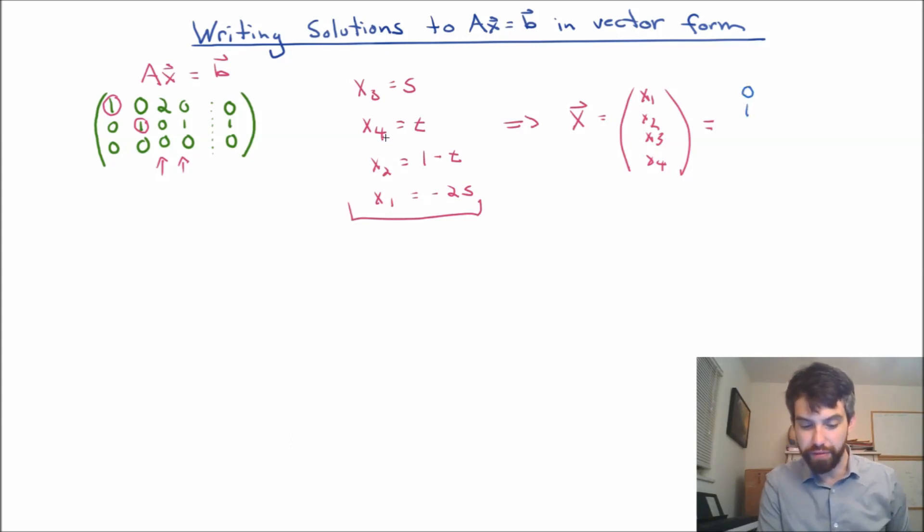In front of the x3, there's going to be a 0. And in front of the x4, there's going to be equal to a 0. So I'm not done, but this represents all of the constants that don't come with parameters.